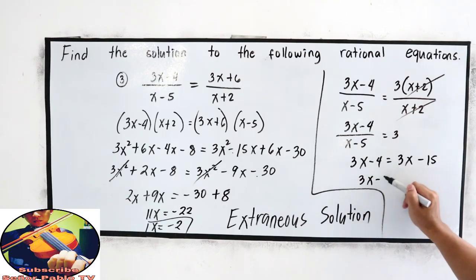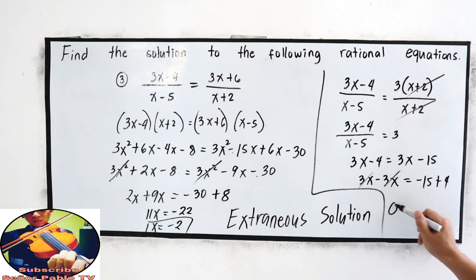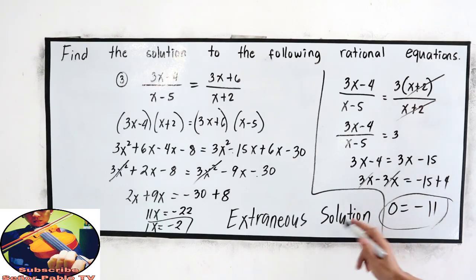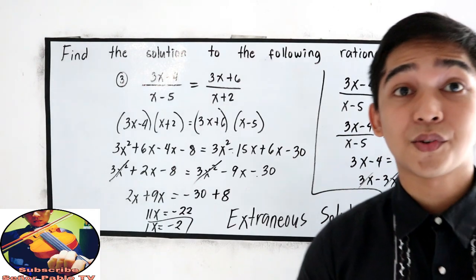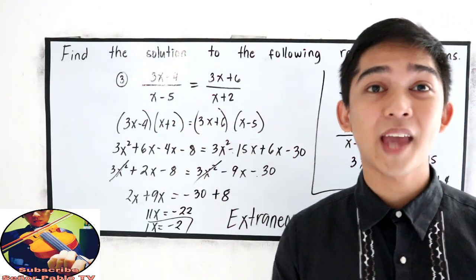Transpose, 3x minus 3x is equal to negative 15 plus 4. This will be cancelled out, 0 is equal to negative 11. So this gives us extraneous solution. We don't have solution for this, x is empty.